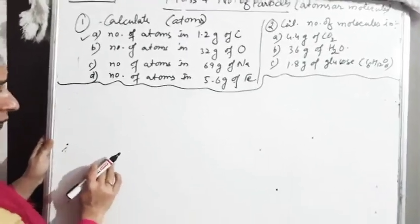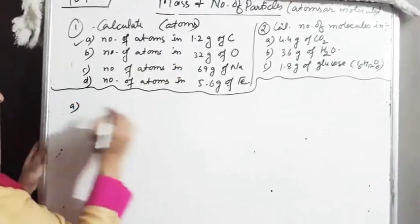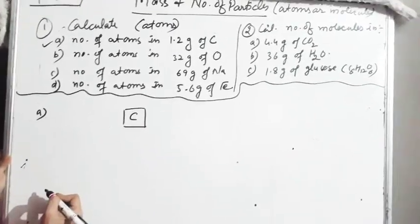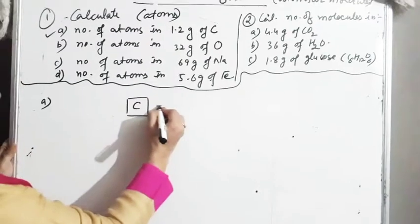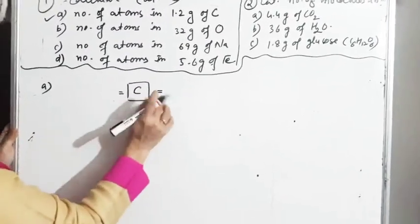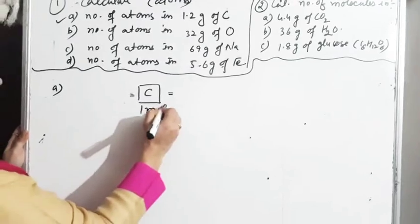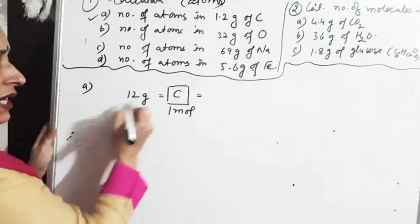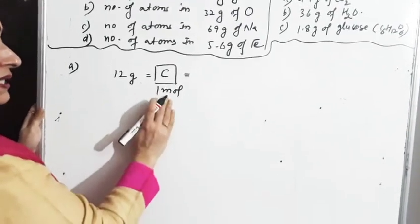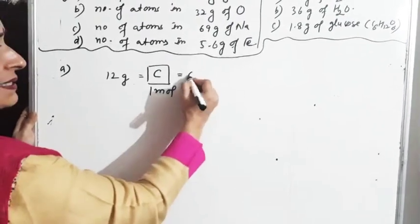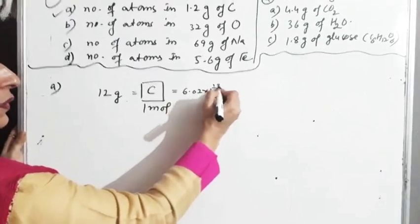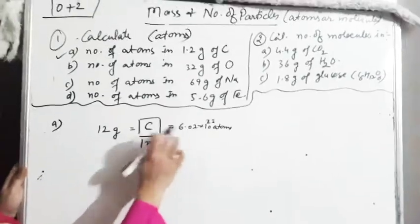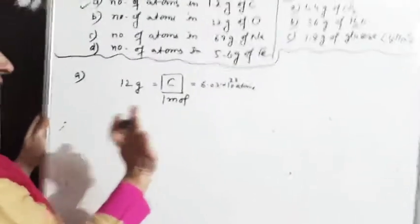1.2 gram of carbon के अंदर number of atoms कितनी होंगी? जैसे मैंने आपको पहले बताया, सबसे पहले जिसके बारे में पूछा गया है उसको center में लिख लिया। This is 1 mole of carbon. इसका mass कितना होता है? 1 mole का, that is 12 gram. And 1 mole में number of particles: 6.02 × 10²³ atoms. क्योंकि यह है carbon, so it will be having atoms.